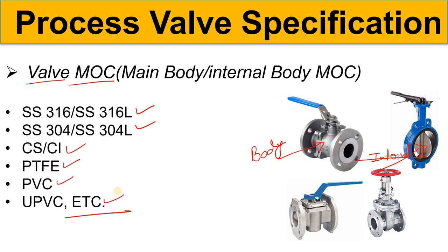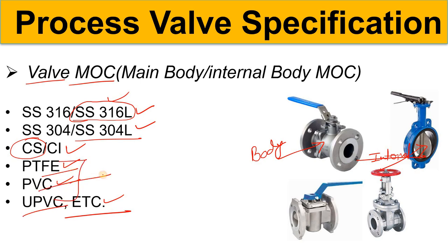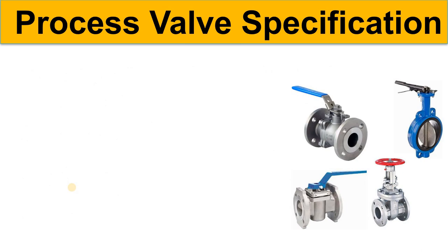If you are handling an acidic fluid or strong acid, you could go with SS316L. For DM water, you could go with SS304L. For cooling water, you could go with carbon steel. There is a question for you all: where do we use PTFE, PVC, and UPVC valves — in which service fluid? Let me know in the comments box.